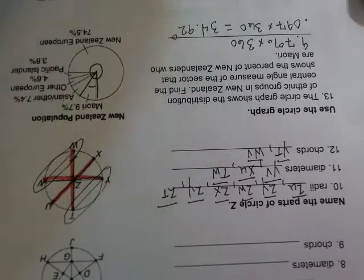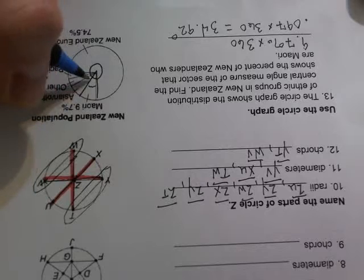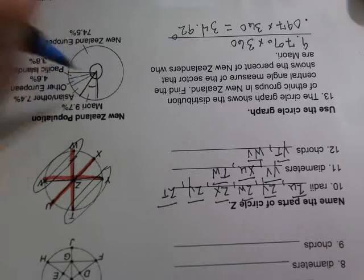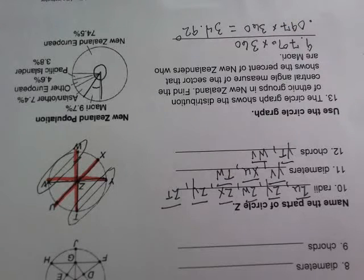The word 'of' means we're multiplying. So we take 9.7% times 360. We write 9.7% as 0.097 — moving the decimal two places to the left and eliminating the percent sign. Then 0.097 times 360 equals 34.92. So the central angle measure for the Maori sector is 34.92 degrees.